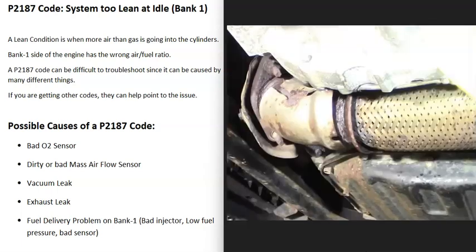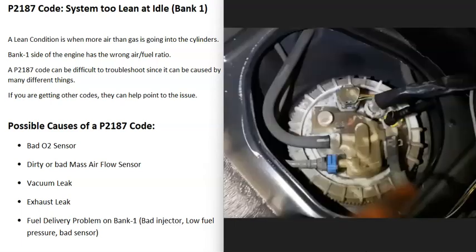An exhaust leak can also cause this code. If outside air is getting into the exhaust before reaching the O2 sensors, it can throw off the sensor readings and cause inaccurate data, so be sure to look out for any exhaust leaks.